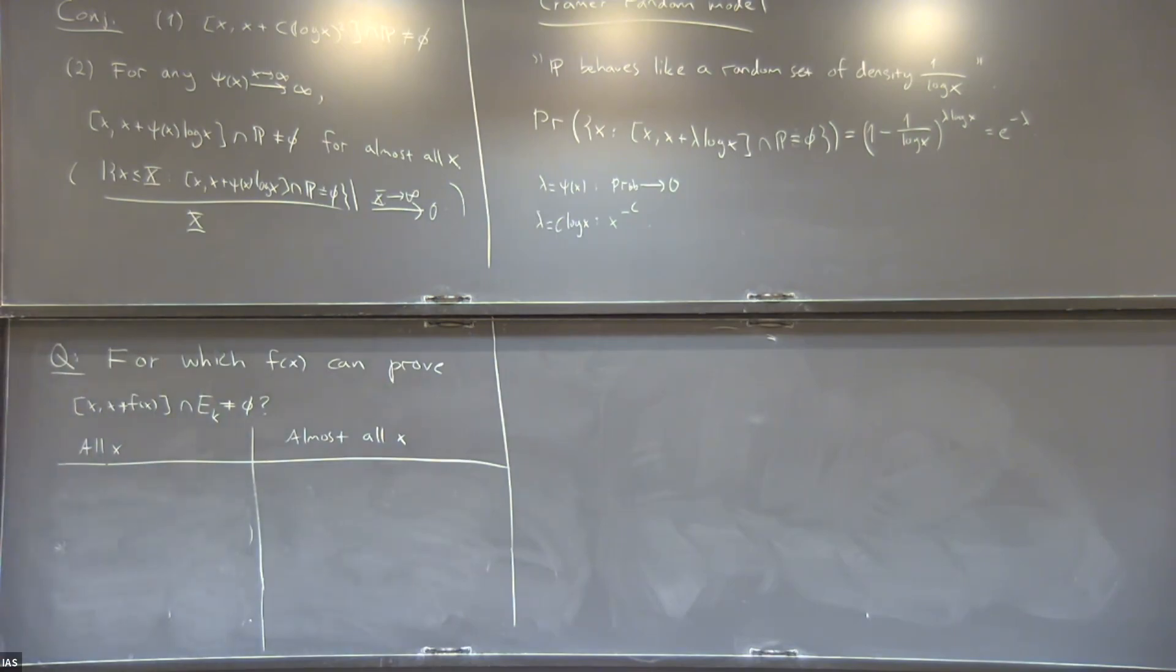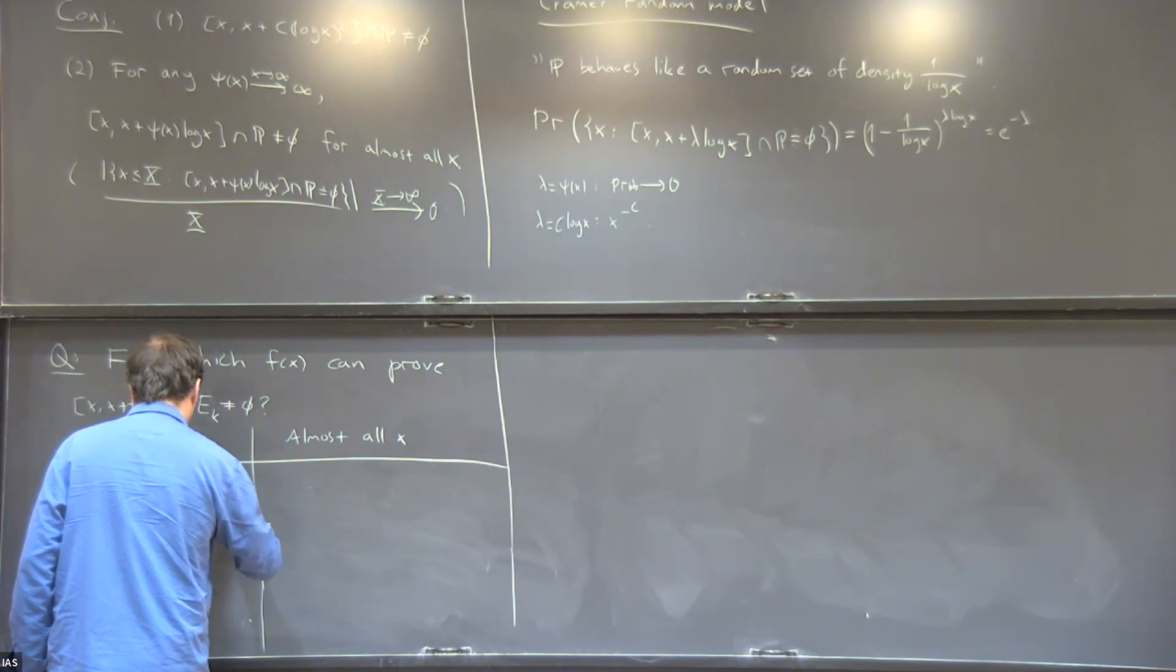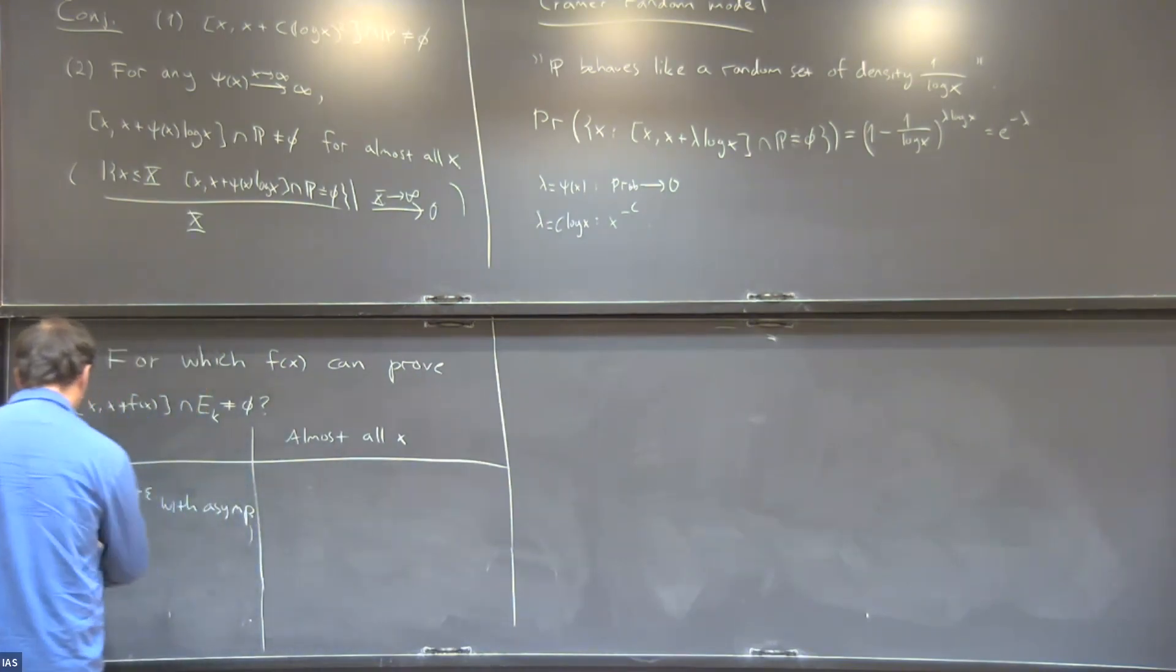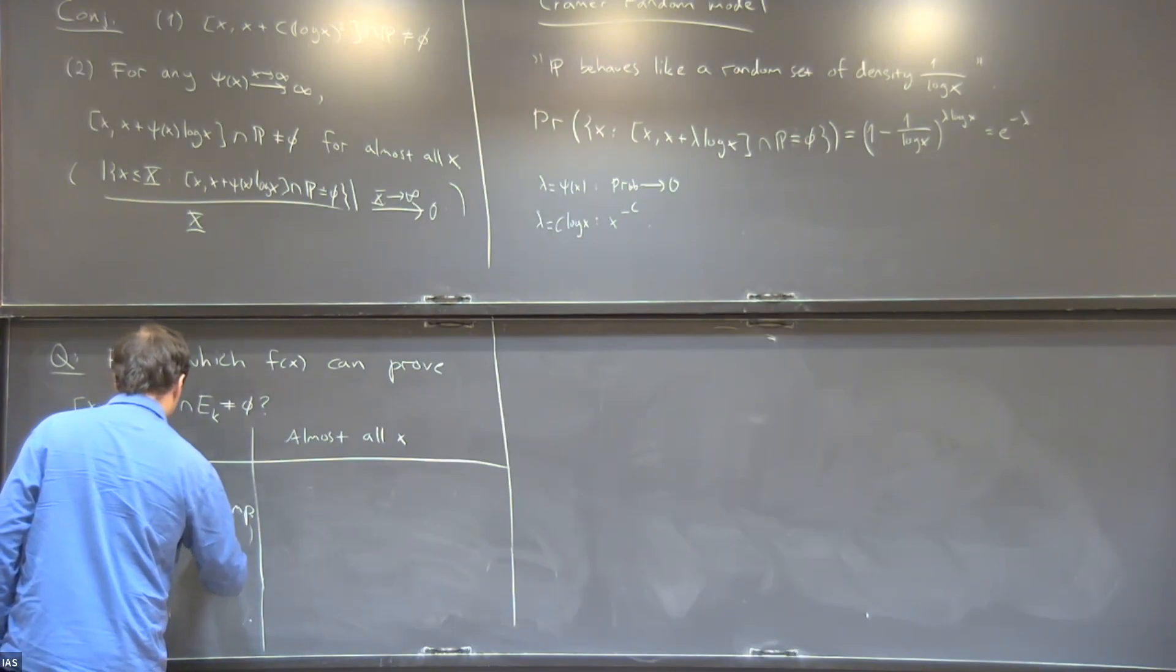Firstly, let's look at all intervals. We can do intervals of length X to the 0.55 plus epsilon with asymptotic for semi-primes. This is work by Matamaki and myself from 2019.